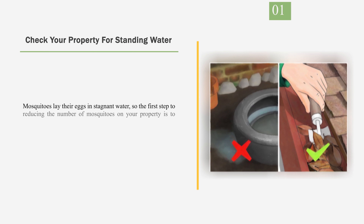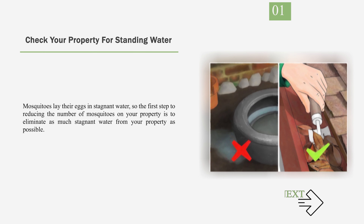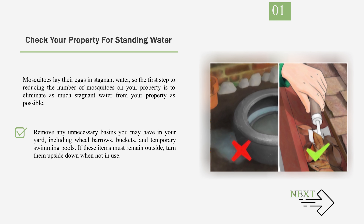Number 1: Check your property for standing water. Mosquitoes lay their eggs in stagnant water, so the first step to reducing the number of mosquitoes on your property is to eliminate as much stagnant water as possible. Remove any unnecessary basins you may have in your yard, including wheelbarrows, buckets, and temporary swimming pools. If these items must remain outside, turn them upside down when not in use.